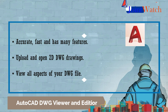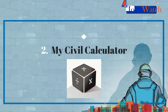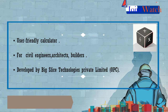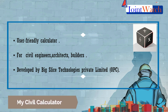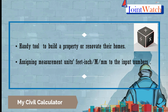Second is My Civil Calc. My Civil Calc is a user-friendly calculator mainly for civil engineers, architects, and builders, developed by Big Slice Technology Privately Limited OPC. It is a handy tool for people intending to build a property or renovate their homes. It has a unique feature of assigning measurement units — feet to inches, meters, millimeters — to input numbers and get the desired result along with the unit.